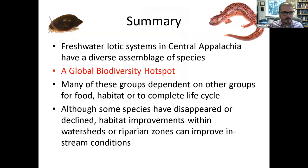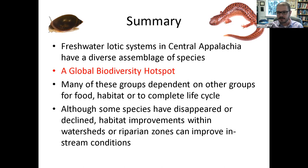In summary, freshwater lotic systems in central Appalachia have a really diverse assemblage of species. It is a global hotspot for biodiversity - we often think of tropical rainforests as global hotspots, and indeed they are, but for mussels, crayfish, and even salamanders, there's no place else in the world where we find more species than in central Appalachia. Many of these groups are dependent on other groups for food, habitat, or to complete their life cycle. We can improve their habitats by making changes to watersheds or riparian zones, which can improve the stream conditions in which these animals live.